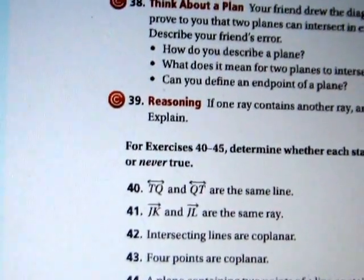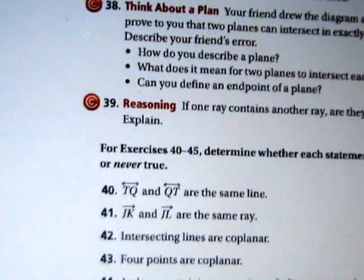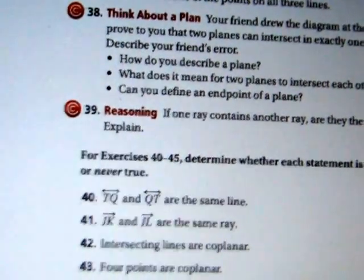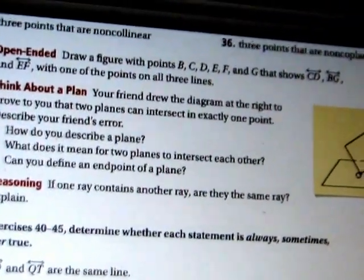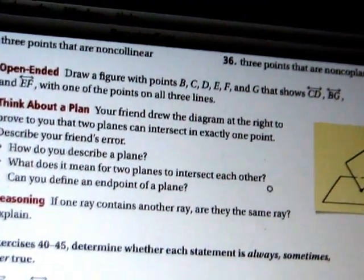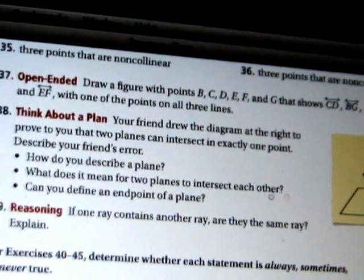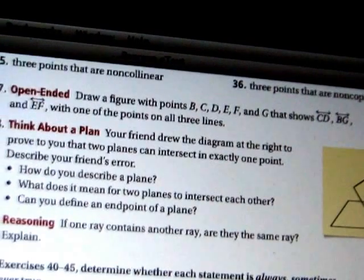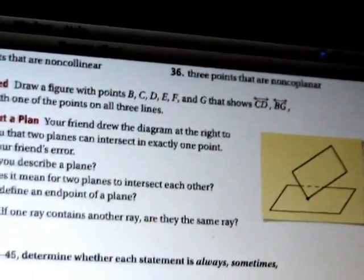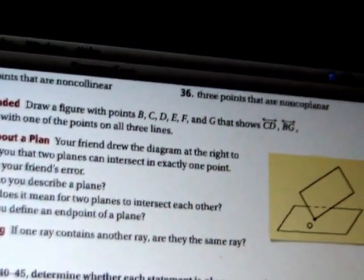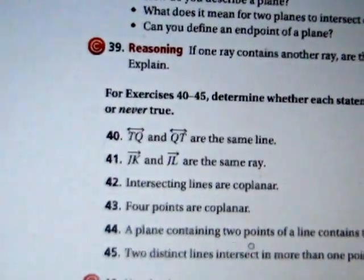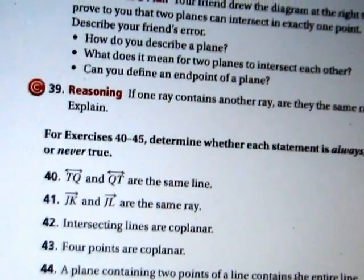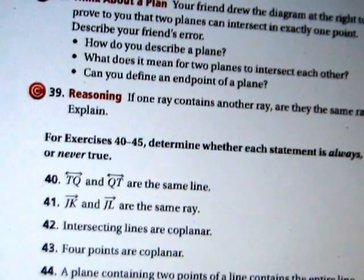44. A plane containing two points of a line contains the entire line. That's interesting. Imagine this plane up here contains a point here and another point here that are on a line. Well, that would mean that that line would go like this across the plane. The plane goes forever and the line goes forever. And if both of those points are on the plane, then that line will never leave the plane. It will be right on the whole time. Meaning that a plane containing two points of a line contains the entire line is something that is always true. As soon as two points of that line are on that plane, all of that line is on that plane.